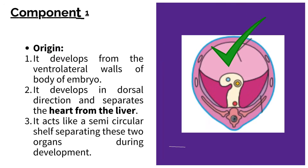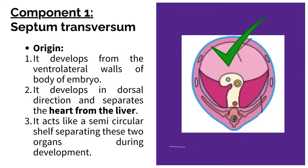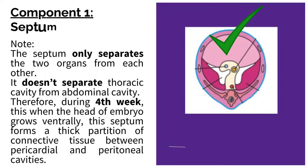Component 1: Septum transversum. It develops from the ventrolateral walls of the body of the embryo. It develops in the dorsal direction and separates the heart from the liver, acting like a semicircular shelf separating these two organs during development. Importantly, the septum only separates the two organs from each other — it does not separate the thoracic cavity from the abdominal cavity.